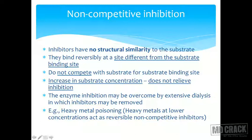The enzyme inhibition may be overcome in certain cases by extensive dialysis, in which the inhibitor may be removed, though this is very rarely done. For reversible non-competitive inhibition, there is only one example: heavy metals at lower concentration. All others are irreversible non-competitive inhibitors, as will be shown in the examples.